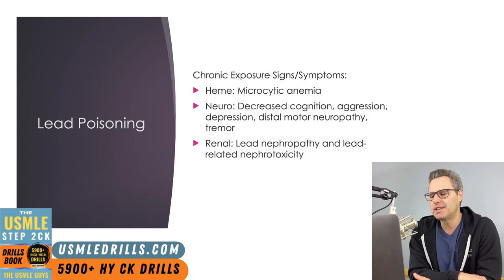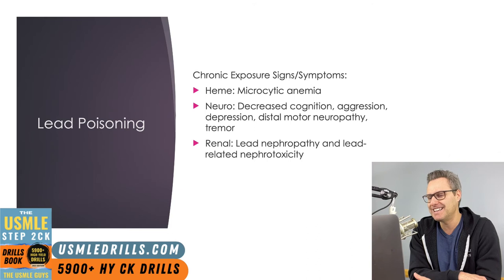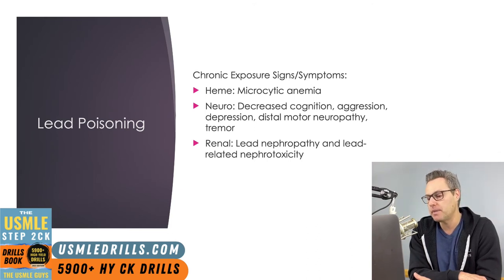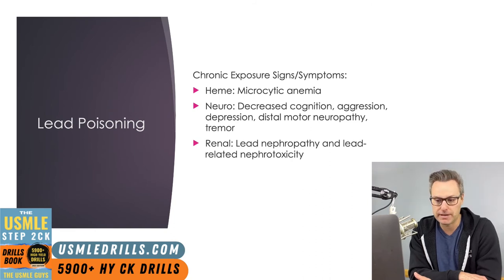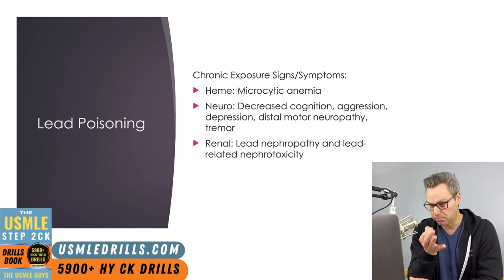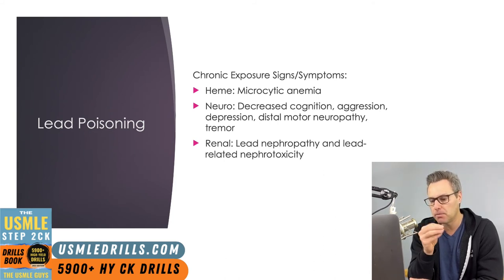Lead inhibits enzymes used in hemoglobin synthesis, such as ferrochelatase. Without functioning ferrochelatase, zinc is inserted into hemoglobin instead of iron. Lead also shortens red blood cell lifespan by causing membrane fragility and can accumulate in the proximal tubule of the kidney, leading to decreased erythropoietin levels. Lead also causes degradation of RNA in RBCs, causing basophilic stippling on a blood smear — an important histological detail to remember.